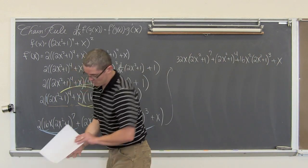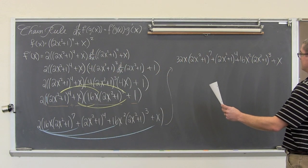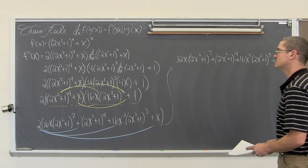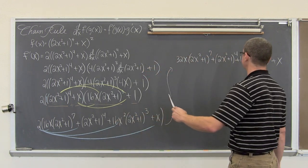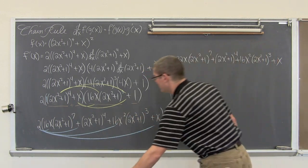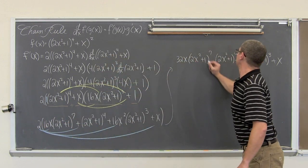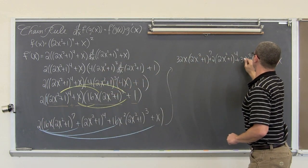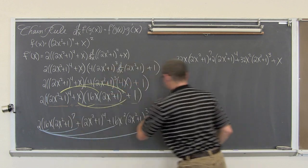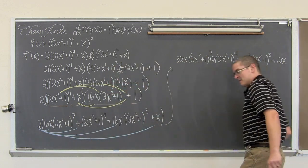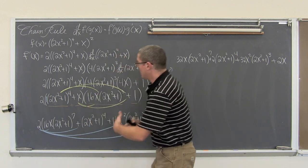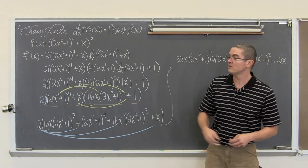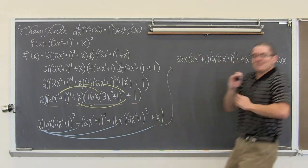Let me just make sure I have not made any small mistakes. I did make one — I forgot to keep multiplying the 2 through. 2 times 16 is 32, and 2 times 1x is 2x. So the final answer is 32x times 2x squared plus 1 to the 7th, plus 2x squared plus 1 to the 4th, plus 16x squared times 2x squared plus 1 to the 3rd, plus 2x. I am Mr. Tarrou — BAM! Got to do your homework.